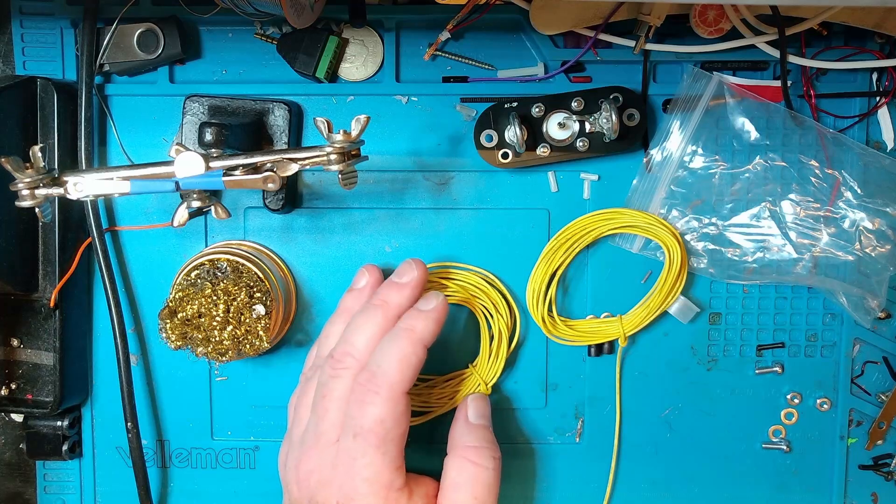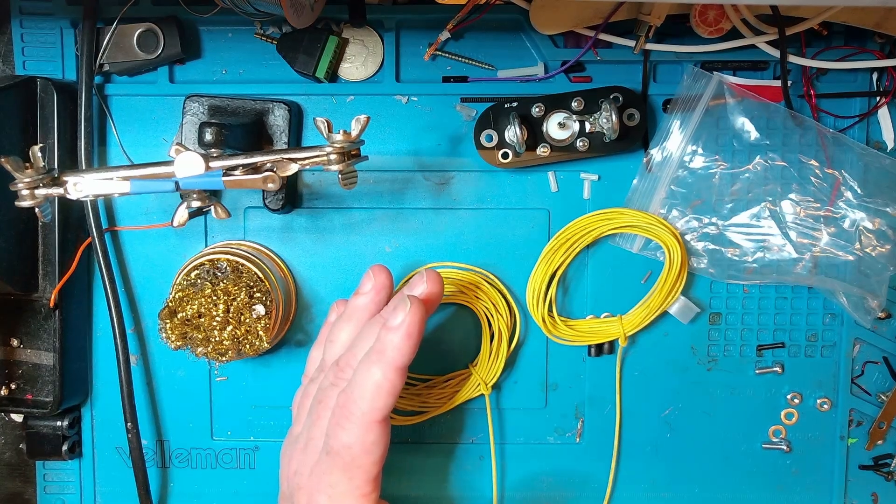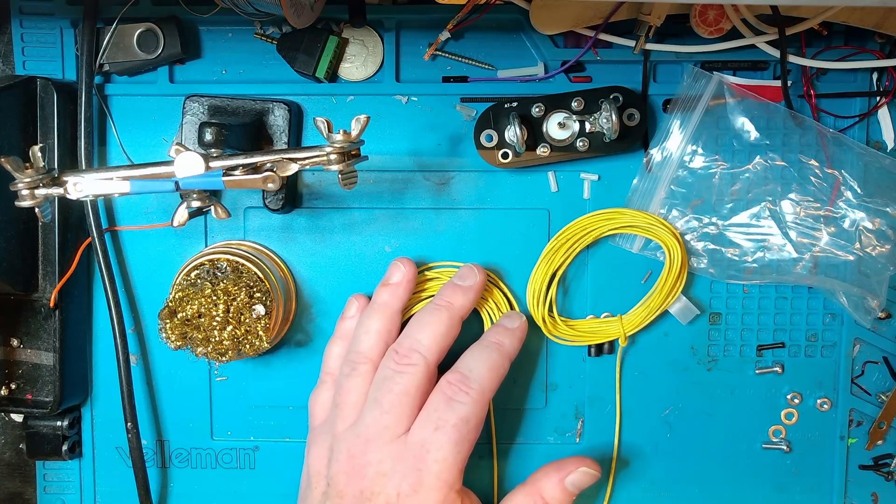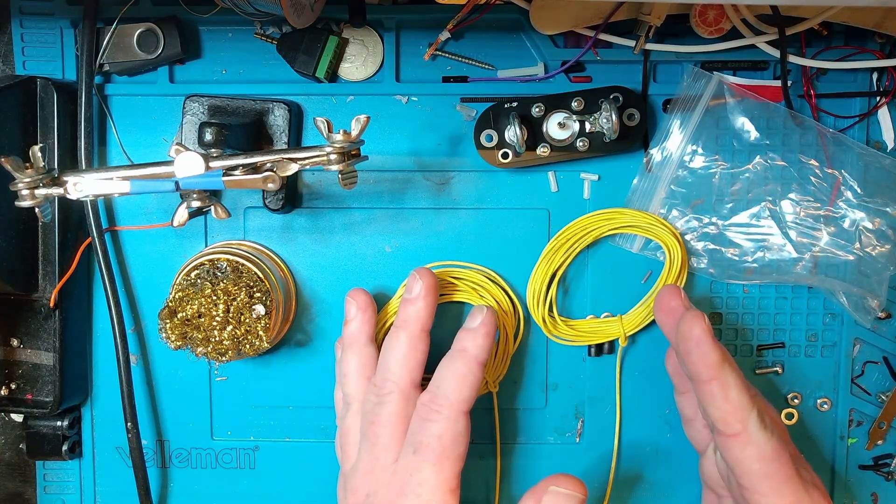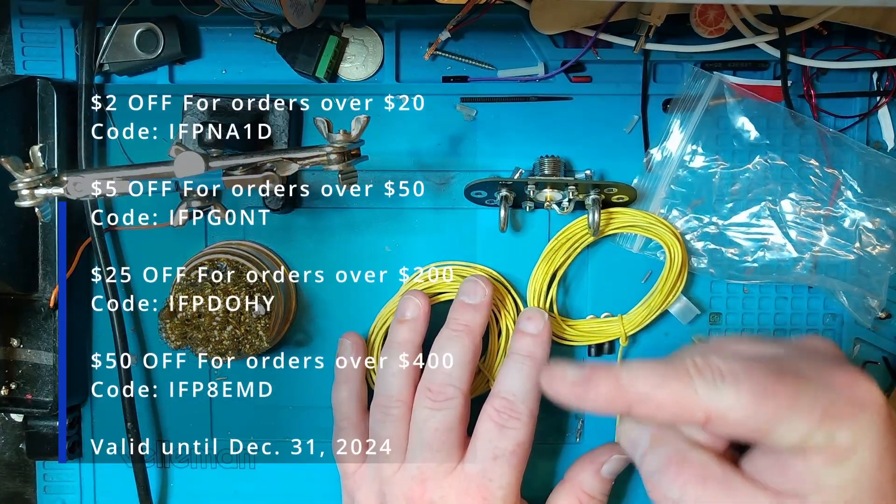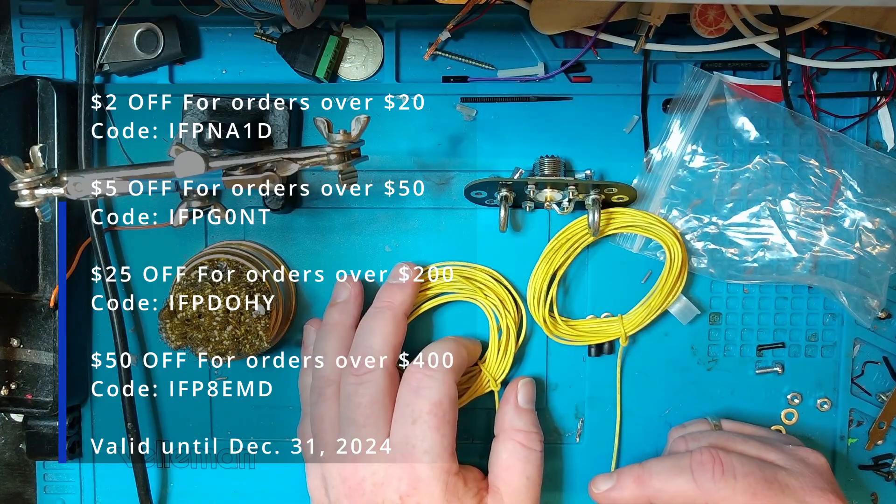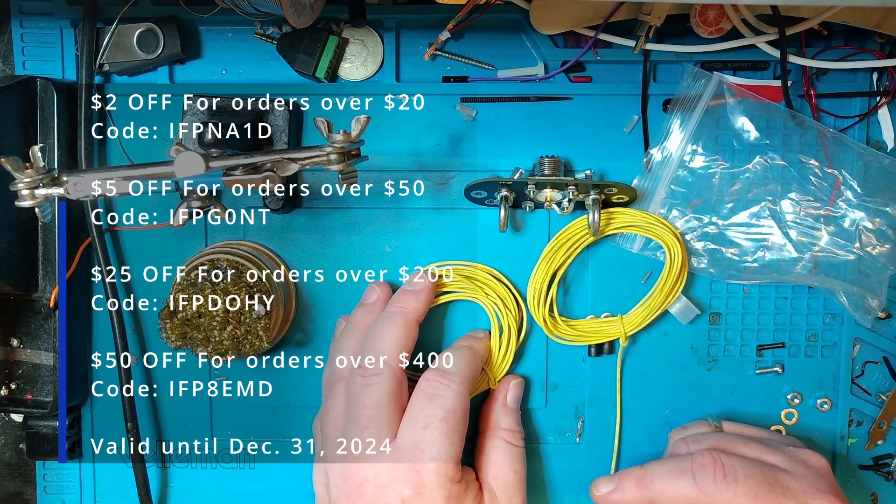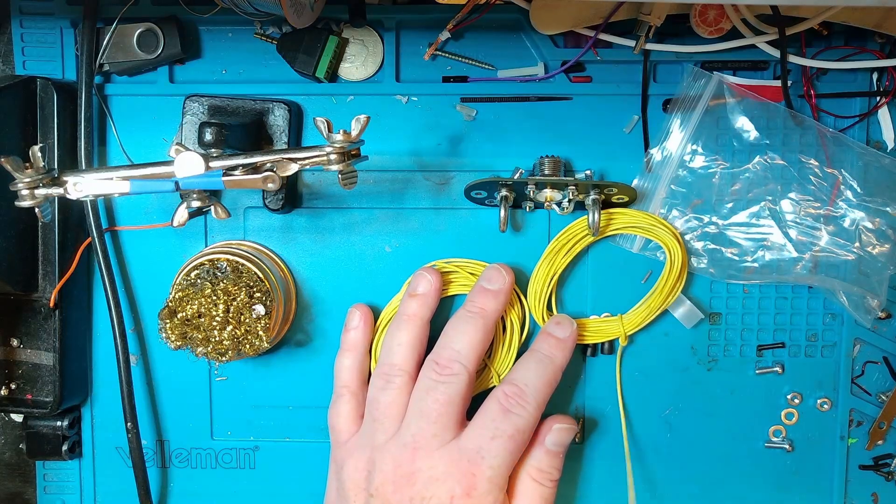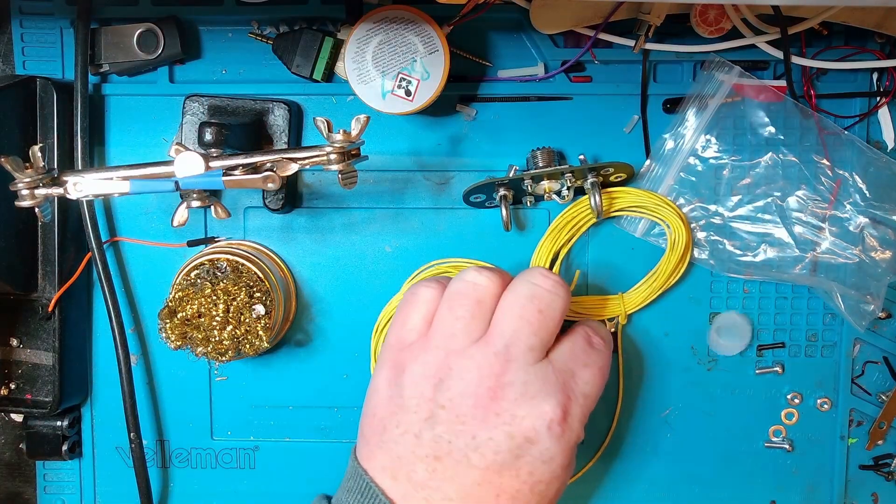So how about we warm up the soldering iron and get some wire on these ring terminals and try to assemble this. For wires I got some high visibility yellow silicone wire here I bought on AliExpress. I haven't tested it before, so this will be the first time I actually remove the insulation on it and see how good it is.